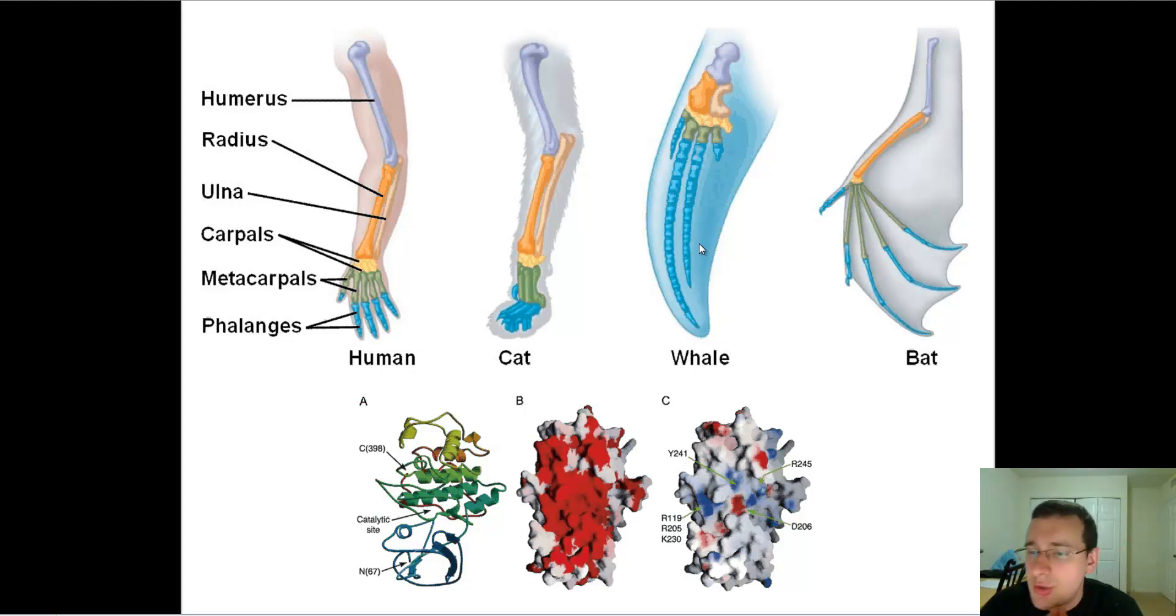But remember, homologous structures is what we call similarities in structure, which gives you evidence that the animal may have shared a common ancestor.